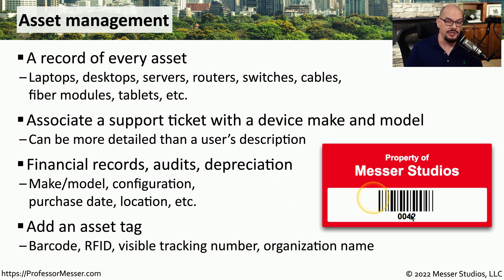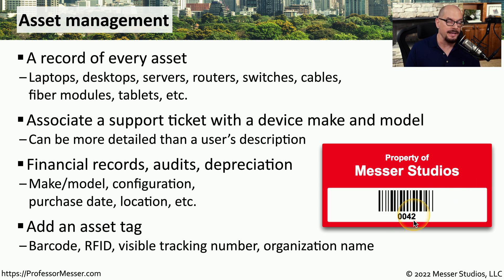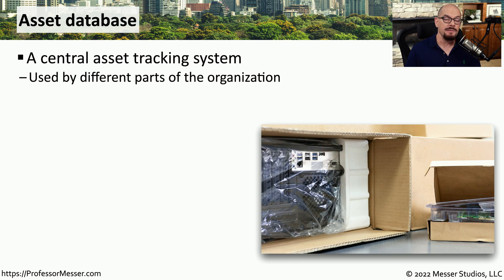In many organizations, an asset tag is physically attached to that particular asset. This might have a barcode or RFID chip, or it might have a number on the asset tag itself so that we can type that into our database and understand more about that particular asset. This asset management process allows us to create a very detailed database, and the information in this database can be used and managed by almost any part of the organization.